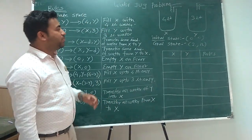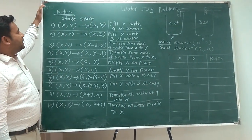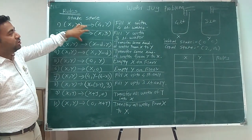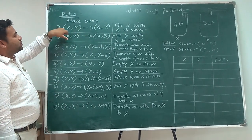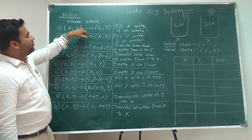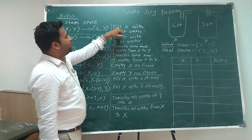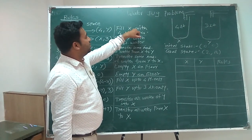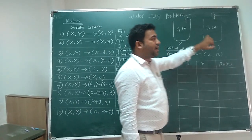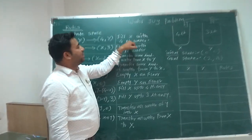Now let us see what are the production rules for solving this problem. There are 10 production rules, already written on the board. The state (x, y) is the initial state. Rule 1 states: fill the first jug to give state (4, y), meaning fill jug x — the first jug — with 4 litres of water.